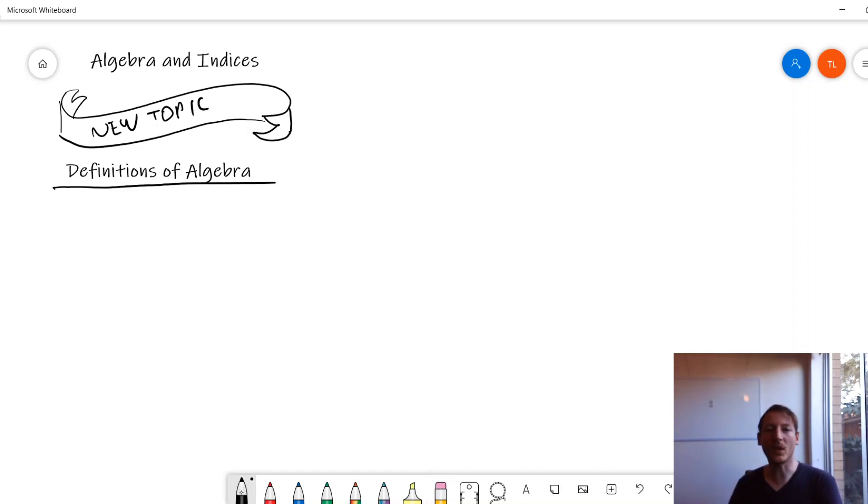So, just remember, pronumerals are numbers we don't know yet but we treat them just the same as numbers. It's just like a question mark that we're trying to figure out. So, that can be our first definition. I might just type it. It might be easier. So, let's say, pronumeral.